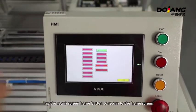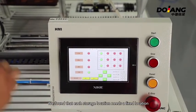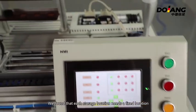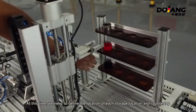Tap the touch screen home button to return to the home screen. We found that each storage location needs a fixed location. At this time, we need to define the location of each storage location and the countertop.